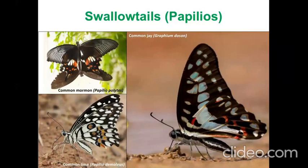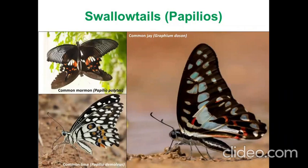In terms of swallowtails, we have only a few: the common jay, common mormon, and lime are among the common ones you can see around Delhi. Most of Delhi's butterfly gardeners are in love with the mormon because it's very common and everybody has gadi patta, which is very easy to obtain. Seeing the life cycle of this butterfly happening so close to your home changes your perception. It has been a very gardener-friendly butterfly in Delhi that has drawn a lot of people into the world of butterflies.